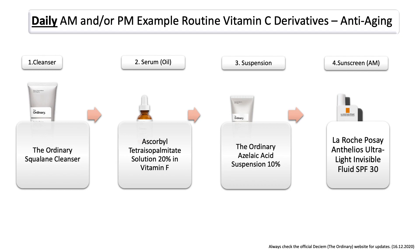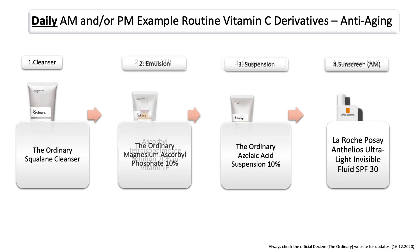Another option is the Ascorbyl Tetraisopalmitate Solution, which is an oil-based vitamin C derivative. Keep in mind that it's an oil when thinking about the layering order, and then apply the Azelaic Acid Suspension on top. The Magnesium Ascorbyl Phosphate is another option — it has a cream-like texture similar to the Azelaic Acid Suspension, so it may feel a little unusual layered together. You can use them in the same routine if it feels good on your skin, but I personally would keep them separate due to the similar textures — though it's entirely a matter of personal preference.